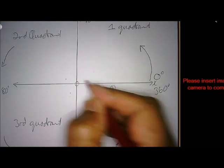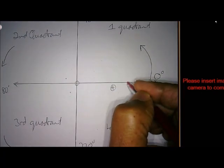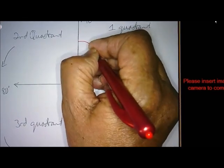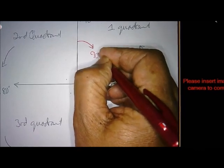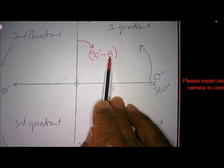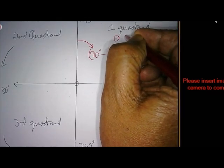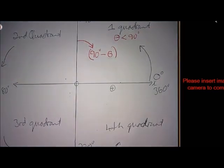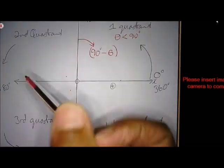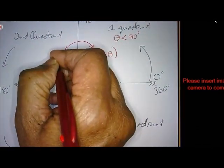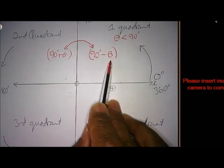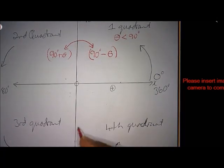Now if I stay within the first quadrant, moving from 90 back, I must subtract theta from 90. Remember theta will be an angle smaller than 90 degrees. So to stay in the first quadrant, I say 90 minus an acute angle. If I go to the second quadrant, it will be 90 plus an acute angle.